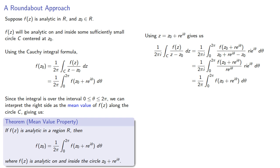If f of z is analytic in some region r, then f of z0 is where f of z is analytic on and inside the circle.